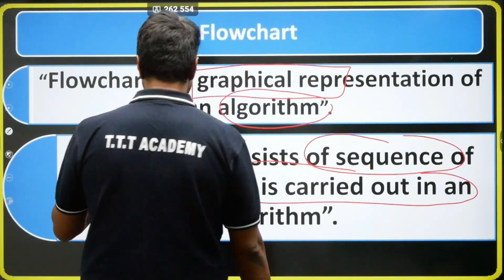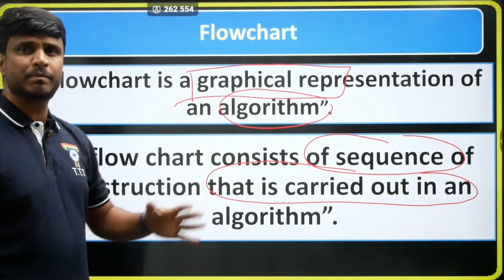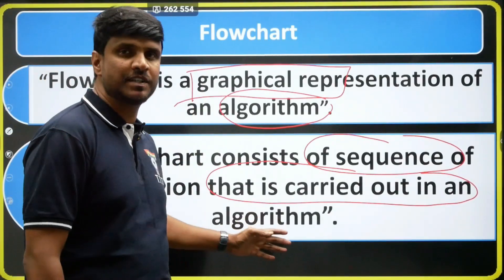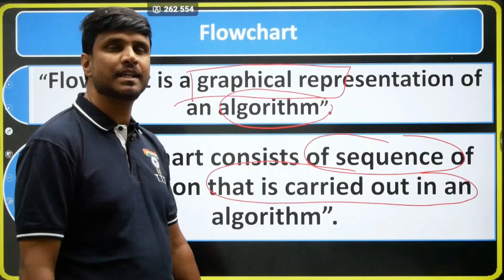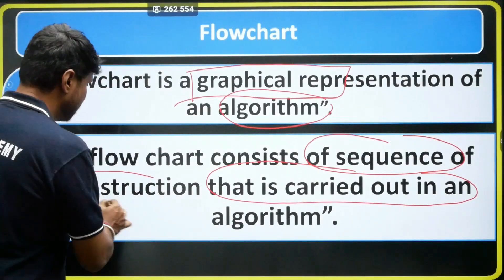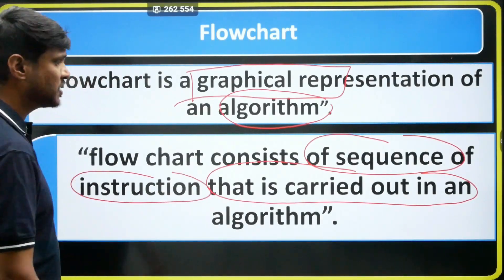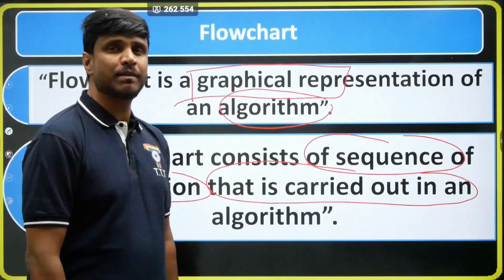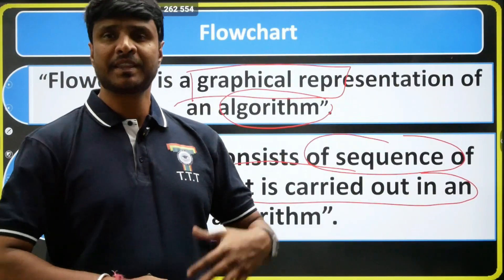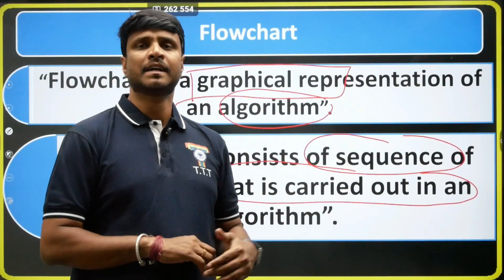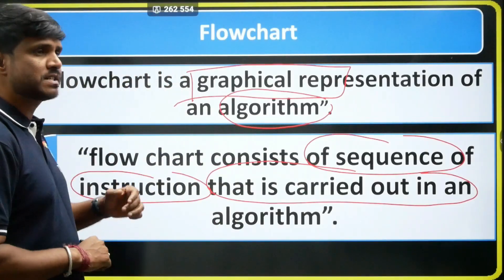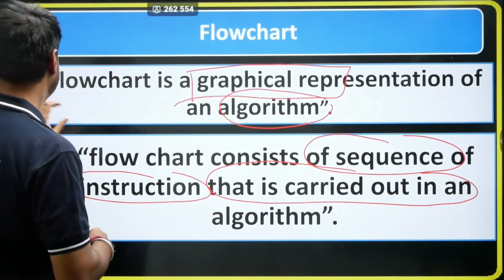So to recap: first definition — flowchart is a graphical representation of algorithm. Second definition — a flowchart is a sequence of instructions, and these instructions carried out an algorithm. These are the two definitions we have for the flowchart.